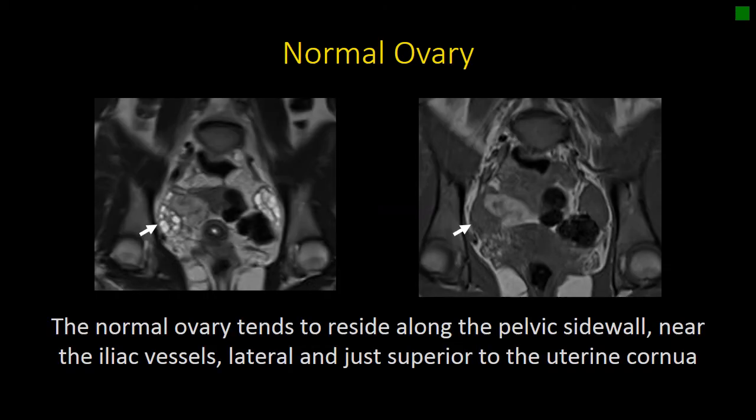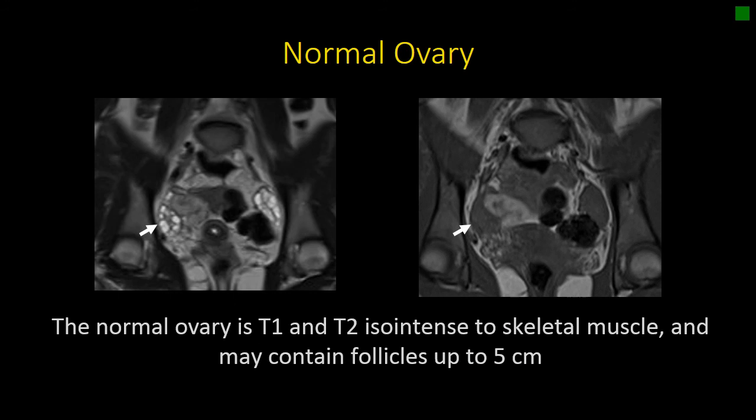On MRI, the normal ovary is going to be in that same location — pelvic sidewall near the iliac vessels, lateral and just superior to the uterine cornea. The ovarian stroma itself tends to be isointense to skeletal muscle on T1 and T2-weighted imaging, although it commonly will contain follicles. Those follicles will be T2 bright and T1 dark and well-defined.